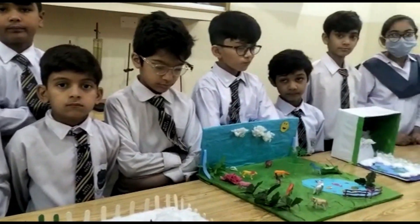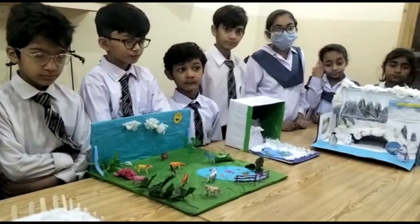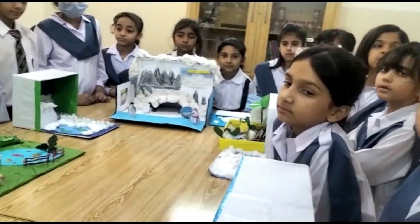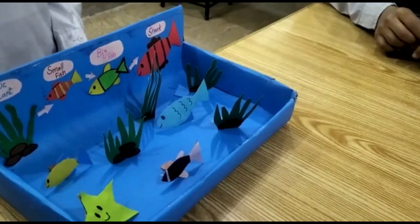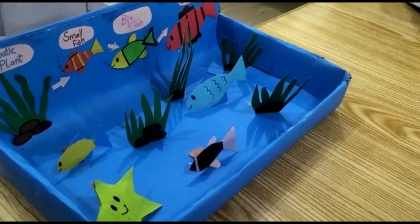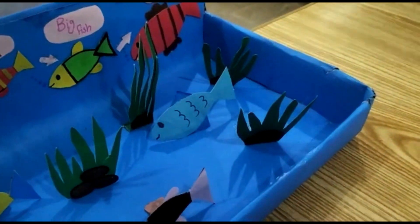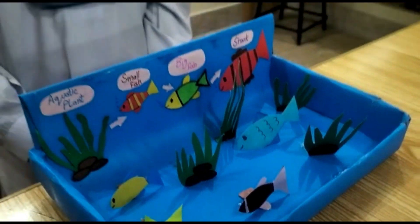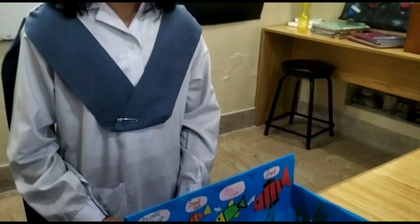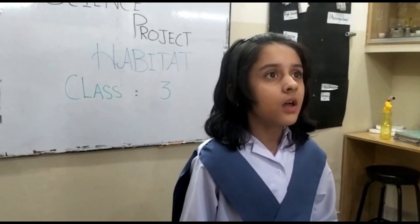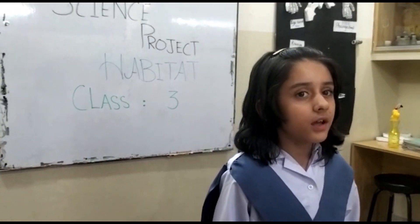Seas are large water bodies having a greater amount of salt and diverse animals. There are various sharks, octopus, jellyfish, etc. Small plants and trees are also present in the sea habitat.